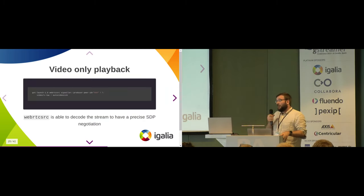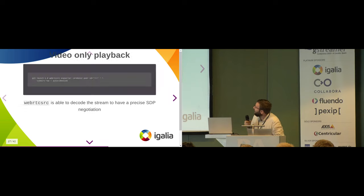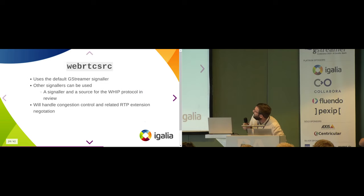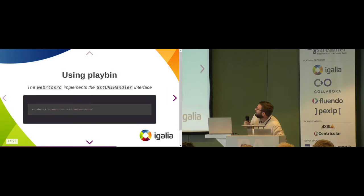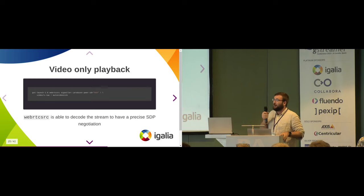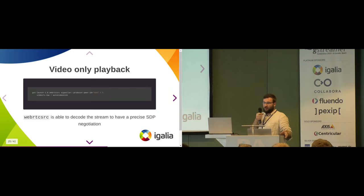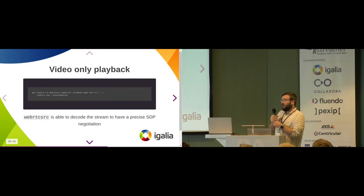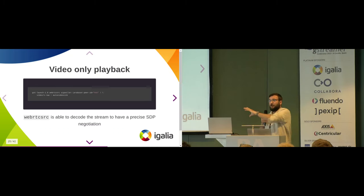You can also make sure it does not do decoding — for example, you could say you want H264 to be output by the WebRTC Source, and it will skip decoding and just output encoded streams. That's very useful if you need to do a quick SFU and just want to retrieve streams from many places and redistribute them. It also implements the URI handler interface, so you can use it with Playbin or anything similar, making it easy to instantiate pipelines to play back streams you want.